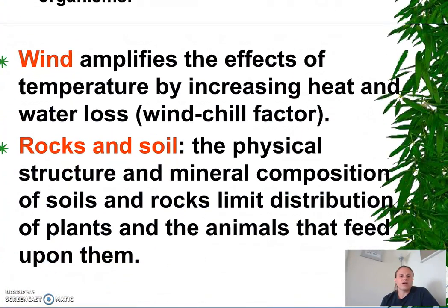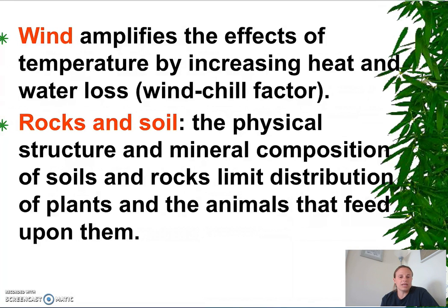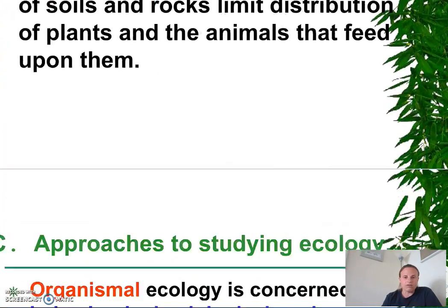Wind can amplify the effects of temperature by increasing heat loss and increasing water loss. Lastly, rocks and soil — the physical structure and mineral composition of soils and rock can limit the distribution of plants and the animals that feed upon them. Different soils can have different pH, and some plants can only tolerate specific ranges of pH.